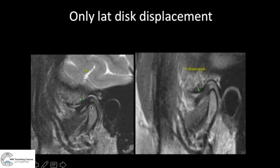In this case, only the lateral portion of the disc was displaced, not the medial portion. If you look at the medial portion, it looks fine — at around 12 o'clock. But when you come more laterally, you can see it is displaced anteriorly. Sometimes only on the coronal image can you detect lateral displacement of the disc, so make sure you look at all planes.